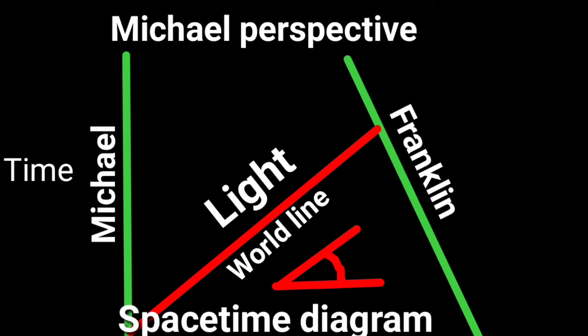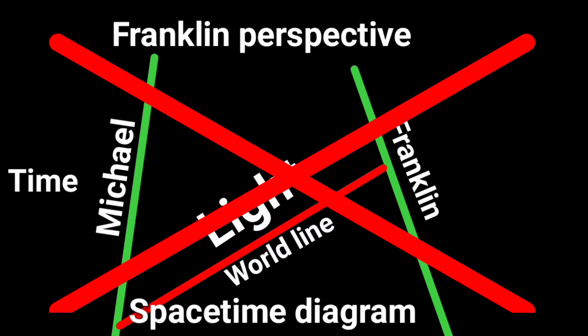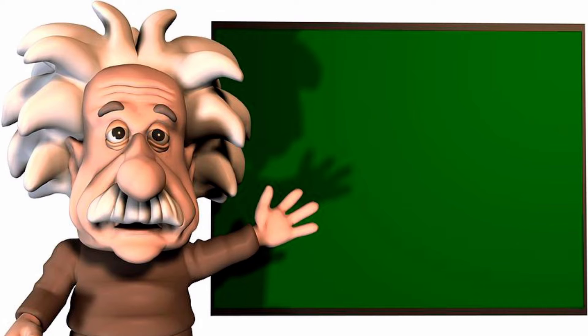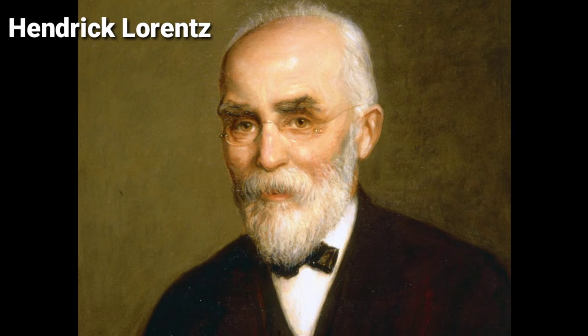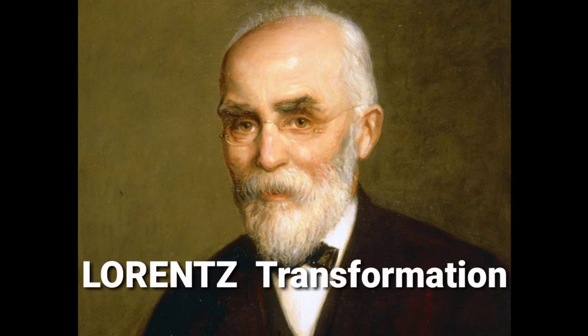In my previous video, we see that in Franklin's perspective, the light is faster than Michael. What is wrong here? But Einstein showed how to see things properly on others' perspective. He introduced a transformation named after the Dutch physicist Hendrik Lorenz, and it is called Lorentz transformation.